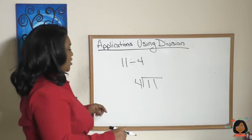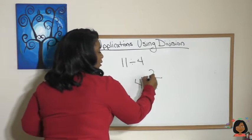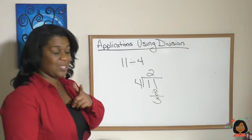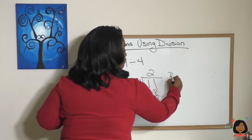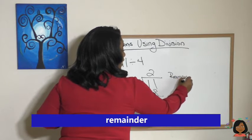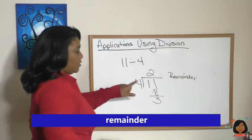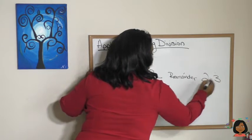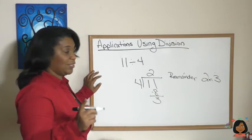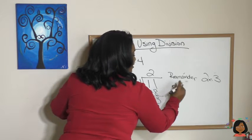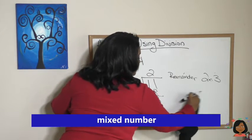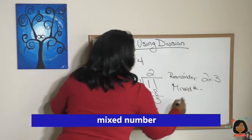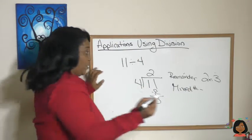We know four goes into 11 twice and three is left over. The very first way you learned to write it is with the remainder — that would be two remainder three. Another way you learned to write it is as a mixed number, and that would be two and three-fourths.